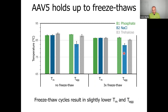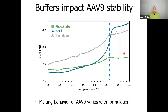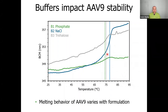When we look at AAV9, we see a much bigger effect of formulation on stability. For AAV5 we saw about a one-degree difference in capsid melting temperatures across buffers; for AAV9, the different melting temperatures span more than four degrees Celsius. So AAV9 is much more impacted by the formulation condition, as read by the melting of the capsid proteins.